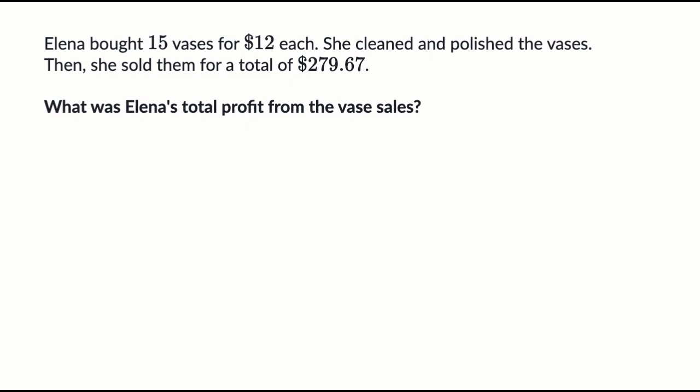So here we are told that Elena bought 15 vases for 12 dollars each. She cleaned and polished the vases. Then she sold them for a total of 279 dollars and 67 cents. What was Elena's total profit from the vase sales? Again, pause the video. Try to figure this out before we do this together.